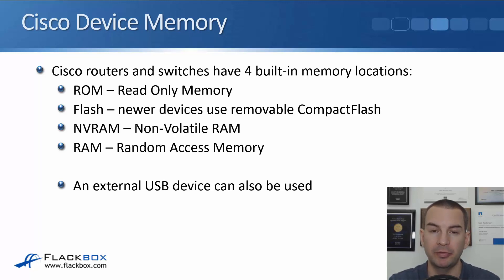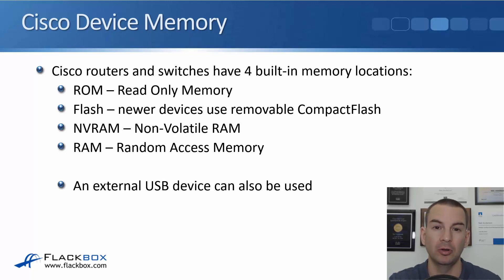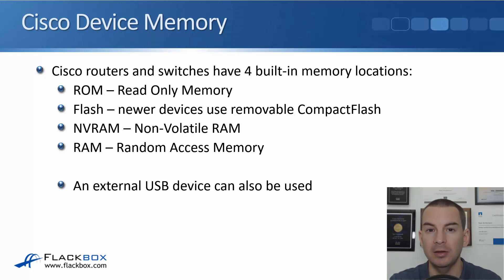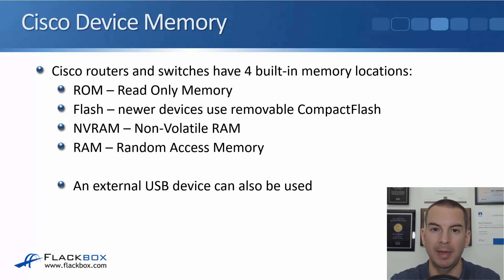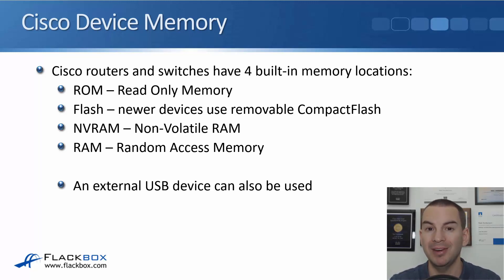Then we have flash. On older devices, that will be installed in the chassis on the motherboard. On newer devices, it's a removable compact flash card. Then we've got NVRAM — the non-volatile RAM — and finally RAM, the normal random access memory. You can also use an external USB memory stick plugged into the device as well.